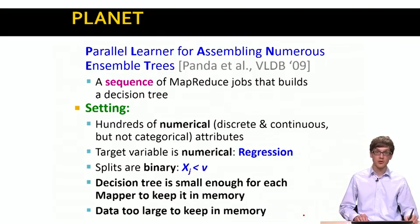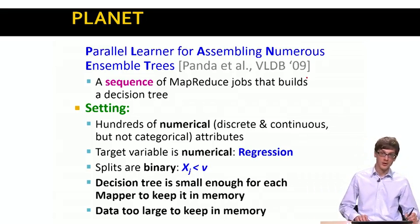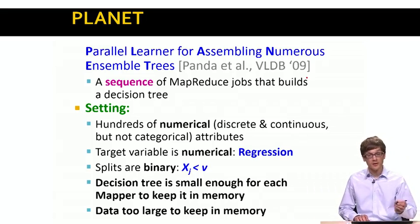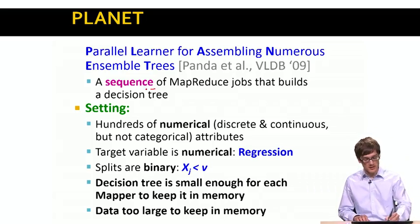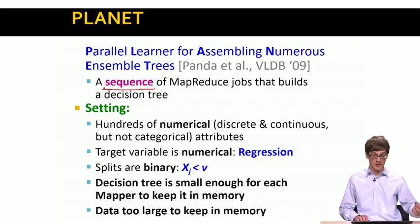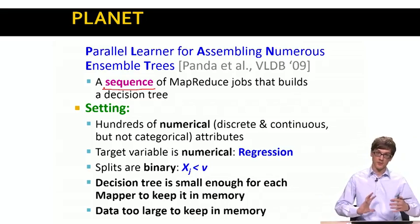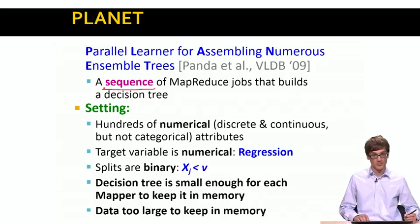The particular approach we will be looking at is called Planet. This was a research paper published by Google a few years ago. What Planet is, it's simply a sequence of MapReduce jobs that builds a decision tree. Our setting in this case is the following: we will focus on a subset of all possible categorical attributes and so on.